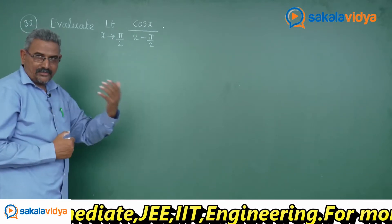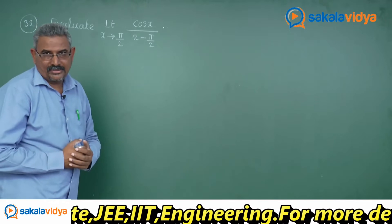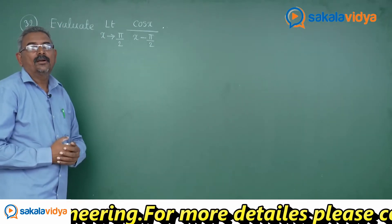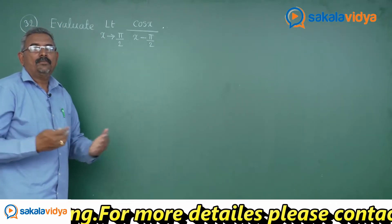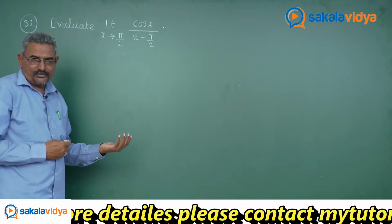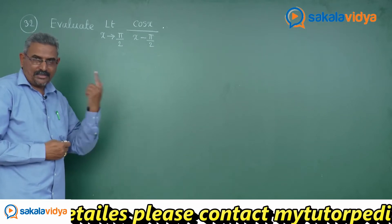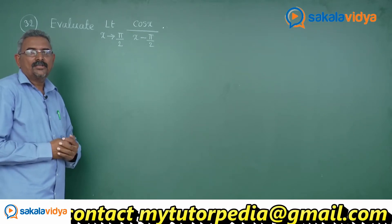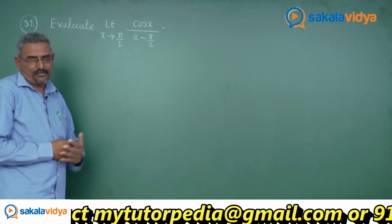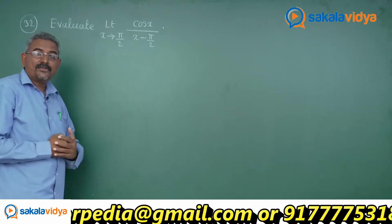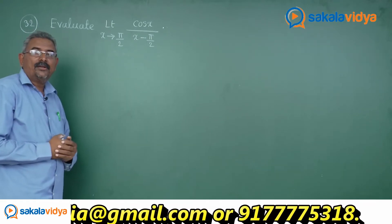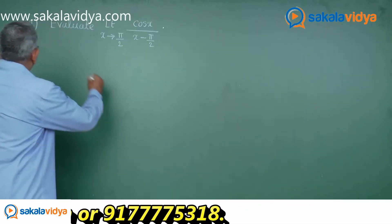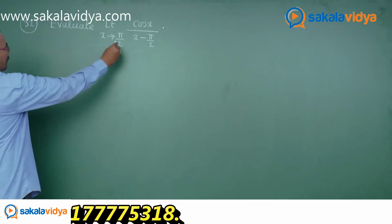Using the identity cos(90 + θ) = -sin θ, we get -sin θ divided by θ. So as the limit θ tends to 0, we get minus 1. The answer is minus 1. But let us solve the problem fully, because it may be given for two marks in the board examinations. Now let us solve this question.